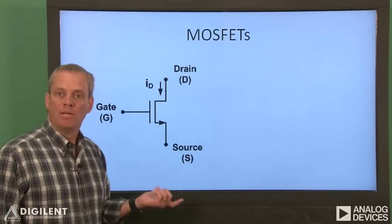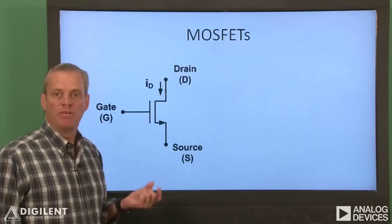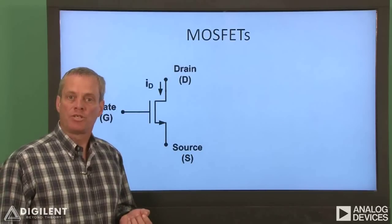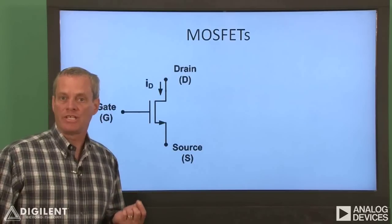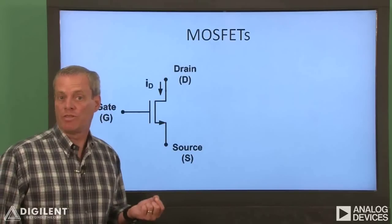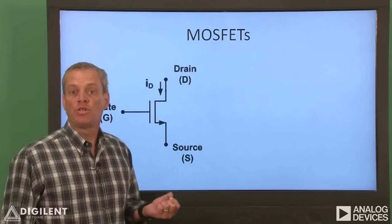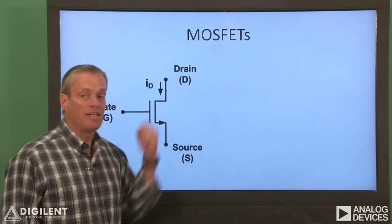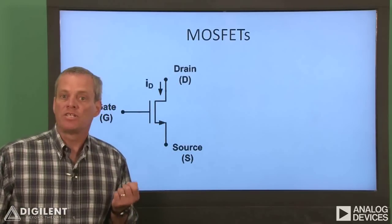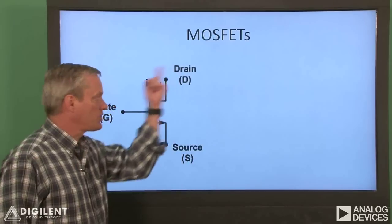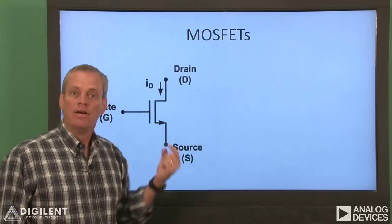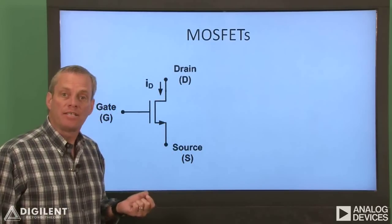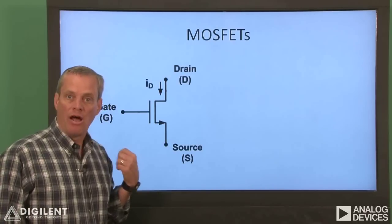In general, there's a minimum gate voltage that must be exceeded before any current can pass from the drain to the source. This minimum voltage is called the threshold voltage. Once the threshold voltage is exceeded, the drain current increases with increasing gate voltage up to the point at which the maximum power which can be supplied at the drain is reached. Please note that the drain current is provided by some source external to this MOSFET. The transistor itself doesn't act as a source.